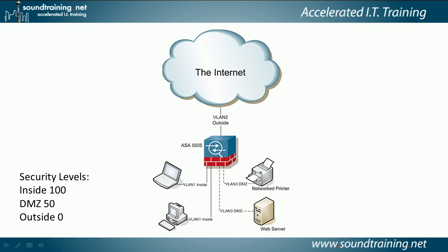Here's another diagram of a DMZ, similar to the previous one, but in the lower left-hand corner we make reference to security levels. Security levels are a way of assigning default permissions for which way traffic can flow. Typically, you'll give an inside network a security level of 100 and an outside network a security level of 0. Traffic can flow from the inside with the higher security level to the outside with the lower security level, relatively unimpeded, but not the other way.